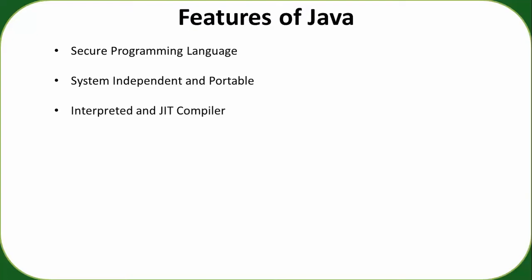Java uses both an interpreter and a Just-in-Time (JIT) compiler, which makes it very fast. The JVM — the Java Virtual Machine — uses both. Where the interpreter performs better, the interpreter is used; where the JIT compiler performs better, the JIT compiler is used.